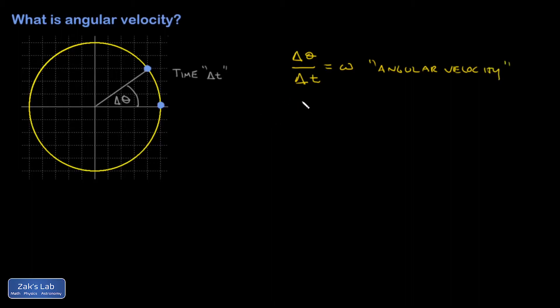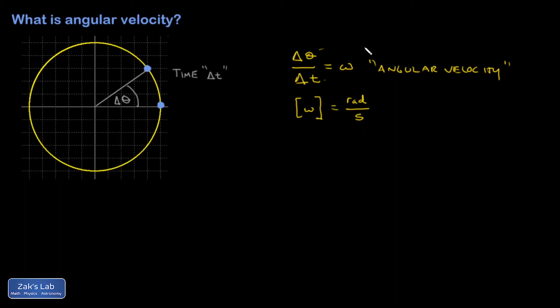So let's look at the units of angular velocity. I see radians on the top, seconds on the bottom, so that's radians per second. For example, 2 pi radians per second is an angular velocity corresponding to an object that makes one full rotation every second.